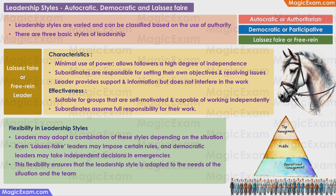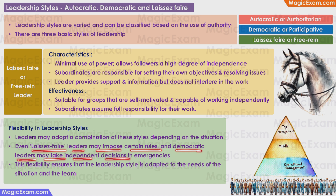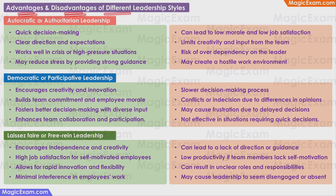Typically in an organization, authoritarian leadership may be used by operational managers who give orders and expect workers to follow them. Middle-level managers typically use democratic leadership, and the top management uses laissez-faire leadership, as they deal with very mature individuals capable of taking their own decisions and taking ownership of their work. Leaders may and must adopt a combination of these three styles depending on the situation. Even laissez-faire leaders may impose certain rules, and even democratic leaders may take independent decisions like autocratic leaders in emergency situations. This flexibility ensures the leadership style is adapted to the needs of the situation and the team.